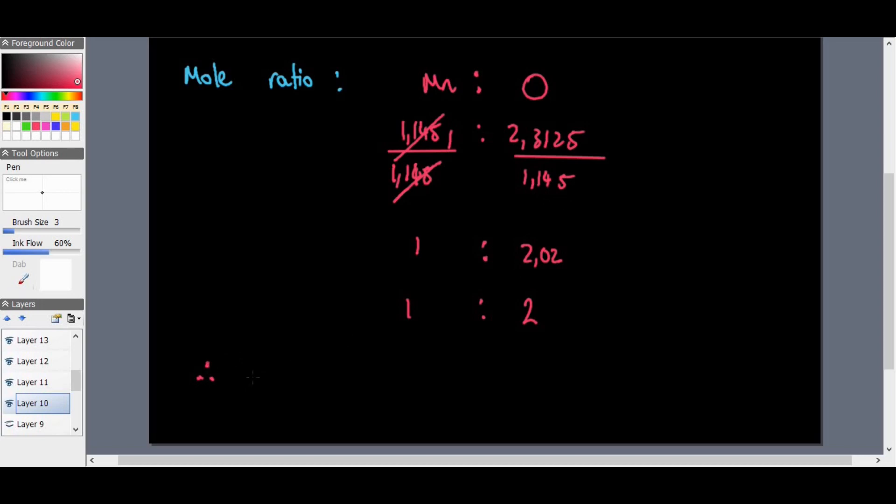So therefore, the empirical formula is MnO2. One of manganese, one of it. That's why we have Mn there, just one. And we have 2 oxygen. So we put a 2 at the bottom of O. So it's MnO2. That is the empirical formula, the simplest whole number ratio of a substance containing 63% manganese and 37% oxygen.